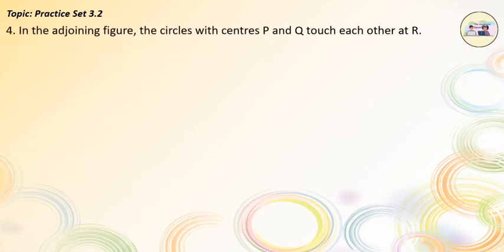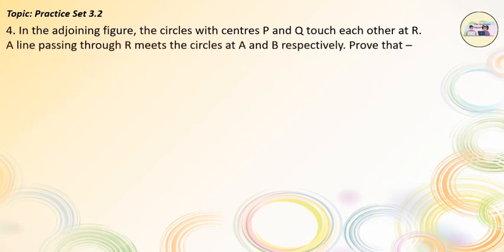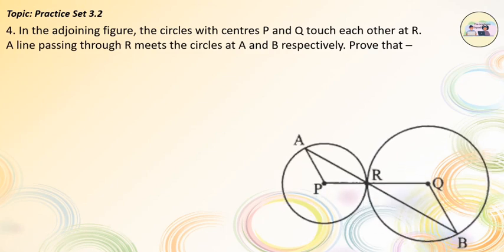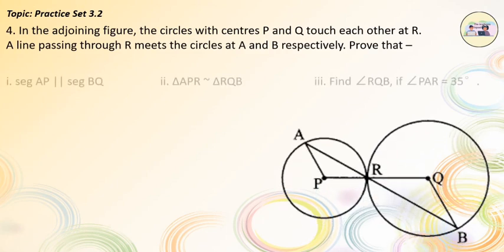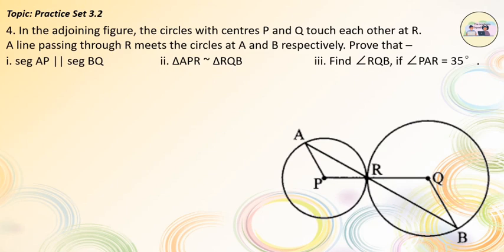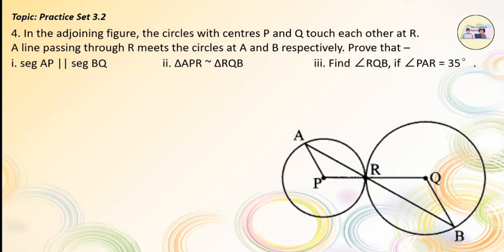Question No. 4. In the adjoining figure, the circles with centers P and Q touch each other at R. A line passing through R meets the circles at A and B respectively. Prove that: first, seg AP is parallel to seg BQ; second, triangle APR is similar to triangle RQB; and third, find angle RQB if angle PAR is 35 degrees.